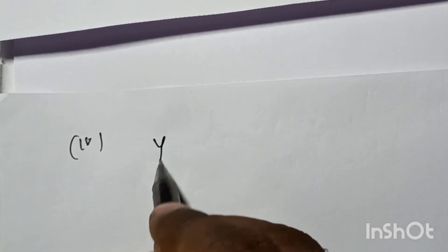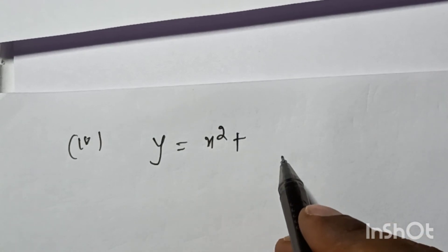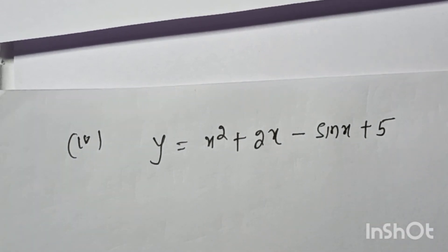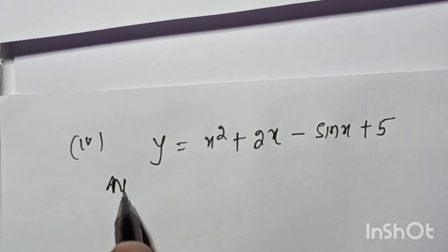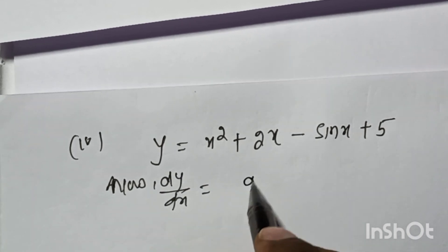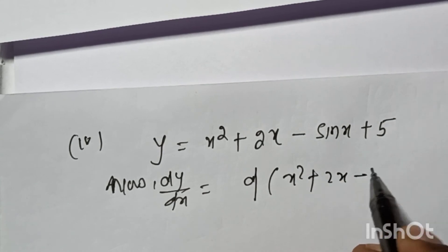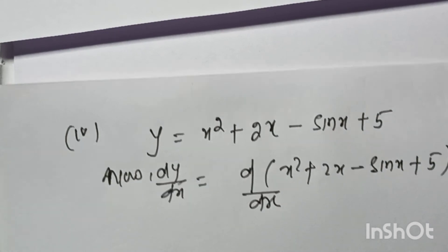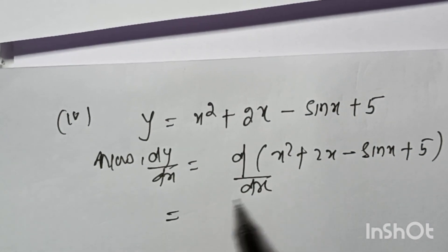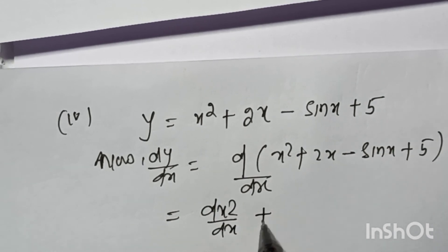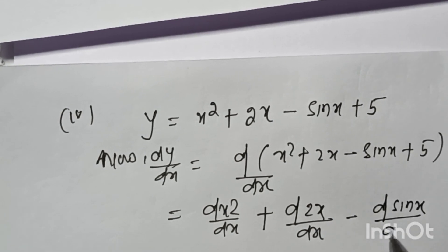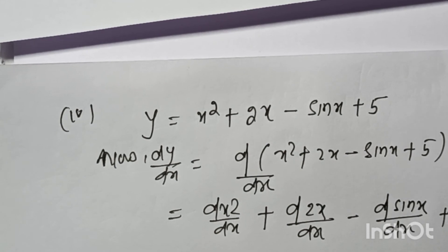Question number 4: y is equal to x² plus 2x minus sin x plus 5. Now dy/dx equals d(x²)/dx plus d(2x)/dx minus d(sin x)/dx plus d(5)/dx.